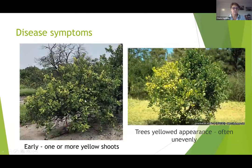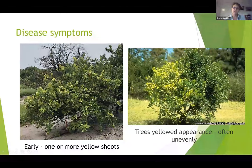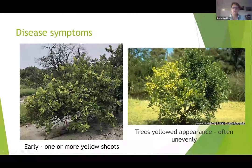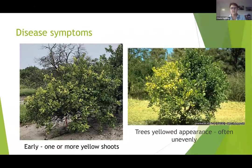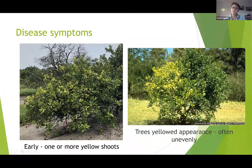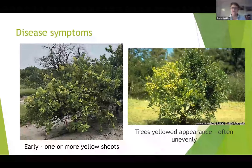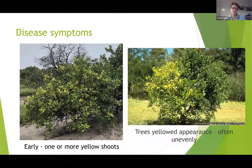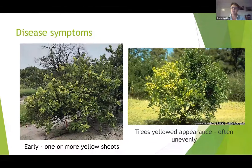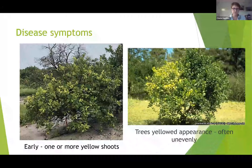As the disease progresses on the tree, you'll get one or more yellow shoots forming, and then eventually larger sections of the tree become yellow, and then eventually the whole tree can be affected. This is another typical aspect of HLB that sets it apart from nutritional disorders, which can also look yellow — that uneven appearance of the symptoms. The bacteria is really unevenly distributed in the tree, and that's why you get the asymmetric type of symptoms.